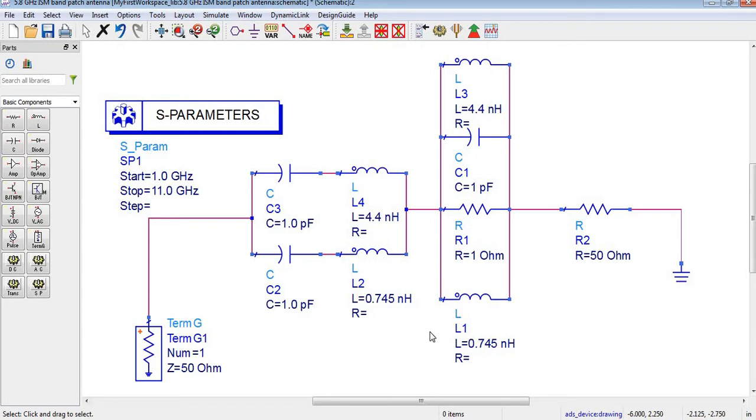The signal will start from here and it will pass from this capacitor and inductor and it will come up to here and then it will pass from this inductor and capacitor and it will go to terminator.